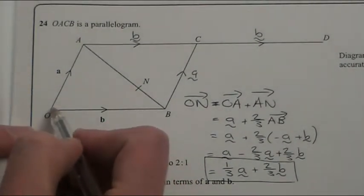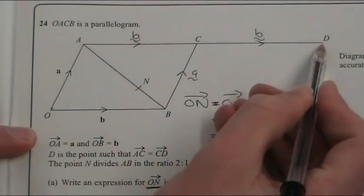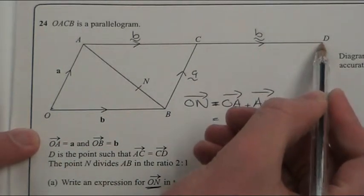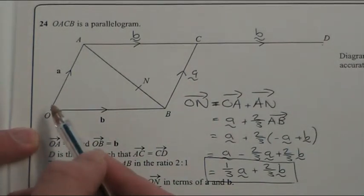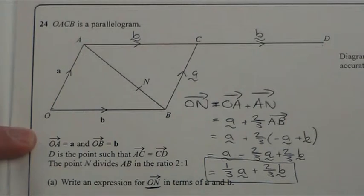We're trying to prove that OND, this point right over here, is a straight line. Well, they're telling us it is, so we have to just show them why we know it is. And to do that we've got to think about vectors.